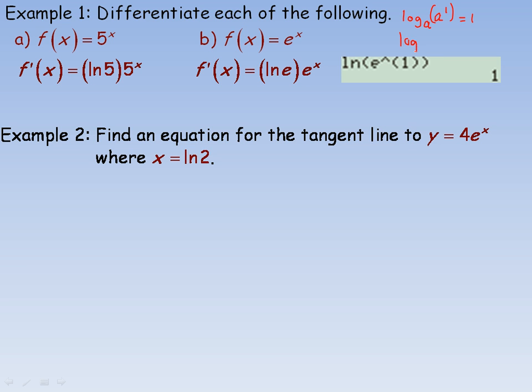So if I write logarithm base e of e to the first, that should equal 1. Well, logarithm base e is what ln is. So that's why the ln of e is equal to 1. And so, since the ln of e is equal to 1, that means the derivative of e to the x is e to the x.